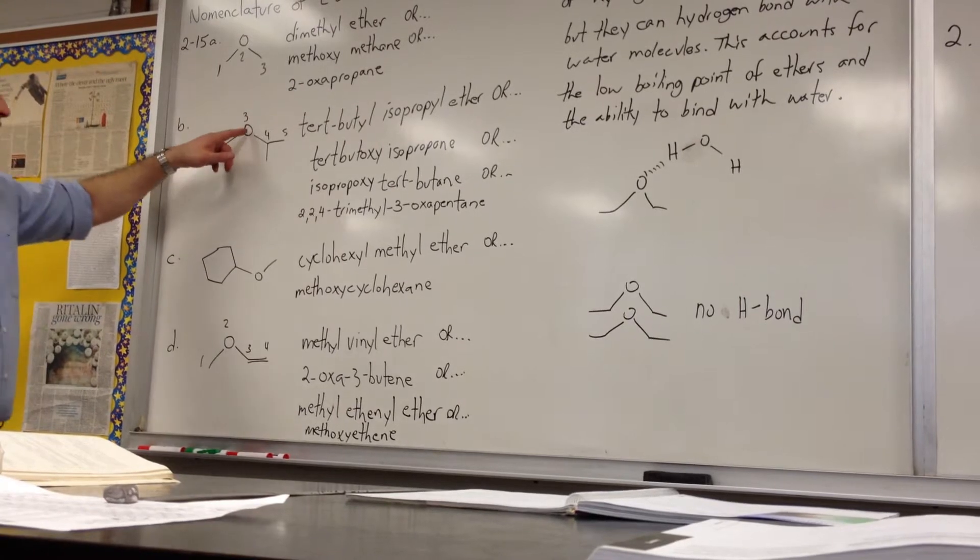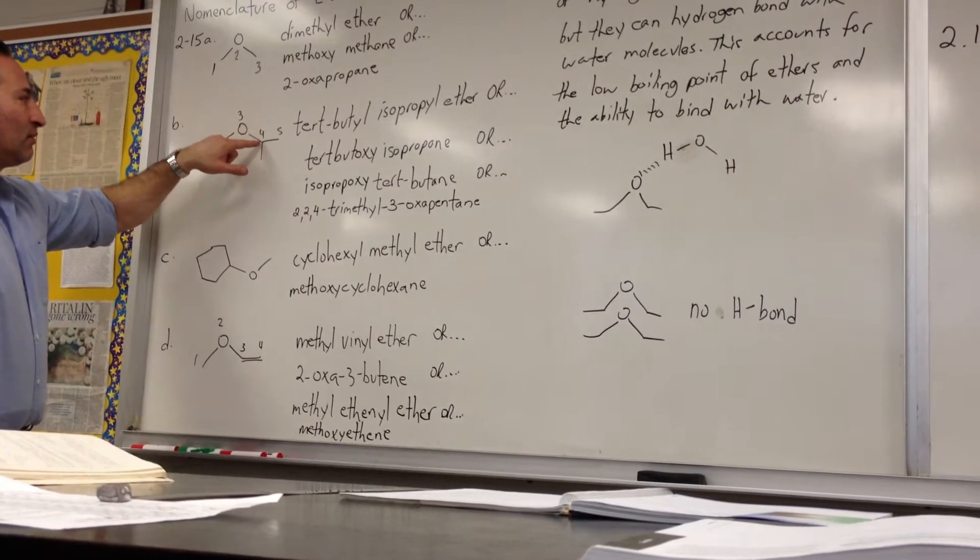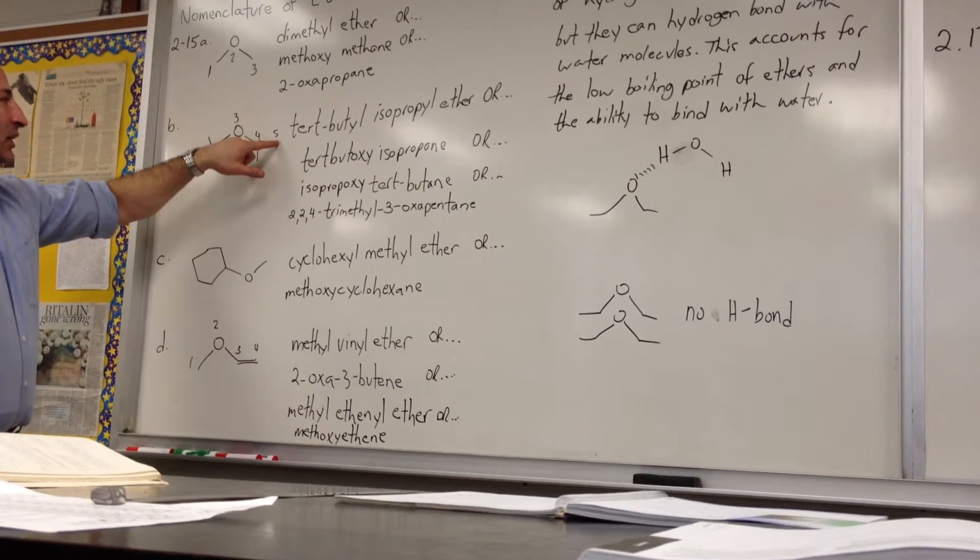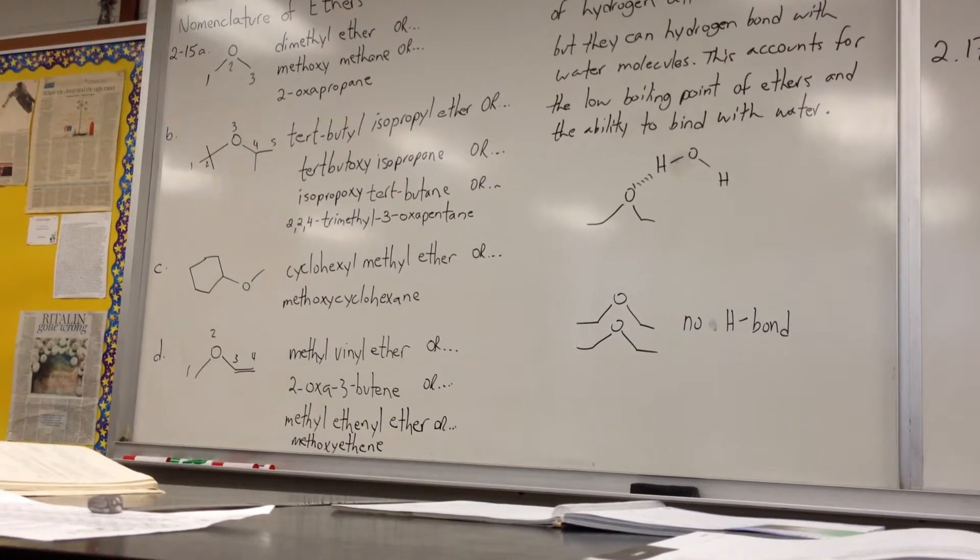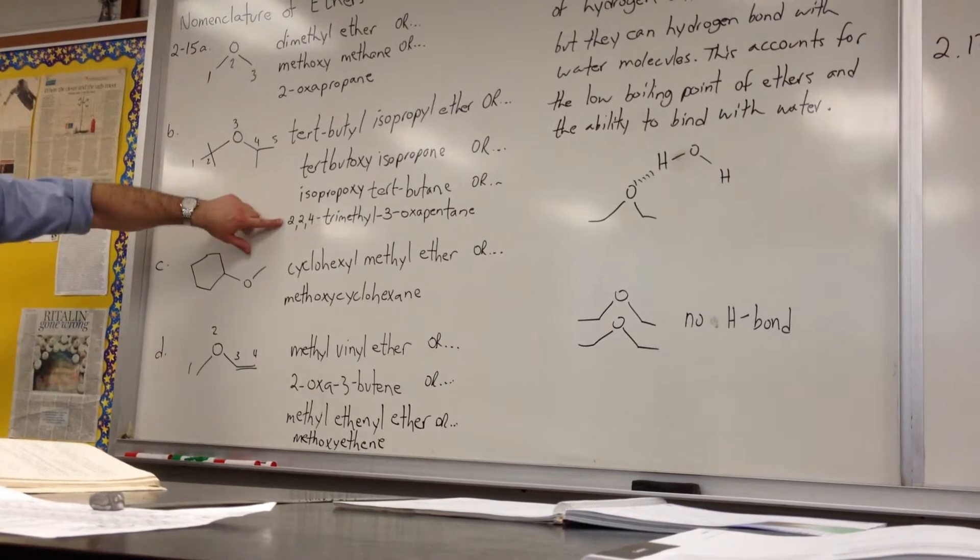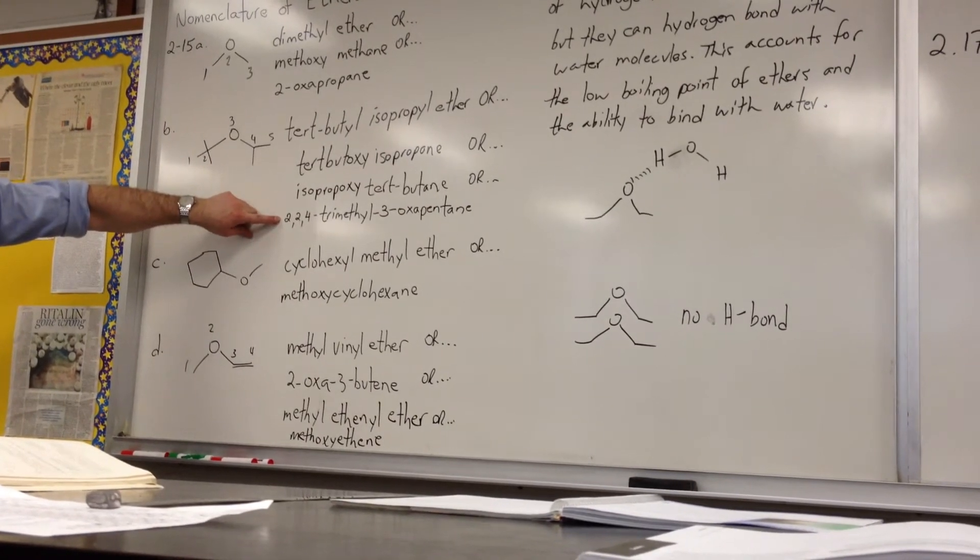The longest continuous chain, if this were a carbon atom, would be one, two, three, four, five. And then you'd see these as the substituents. And this tends to be the naming system that's favored if you look in the more recent literature.